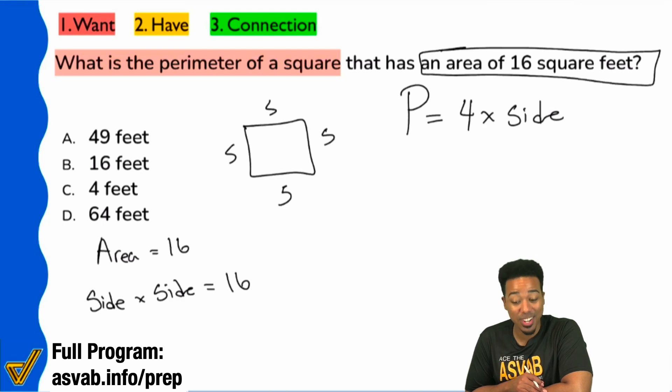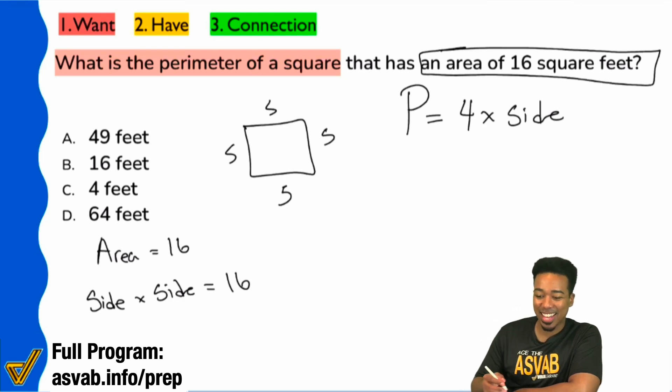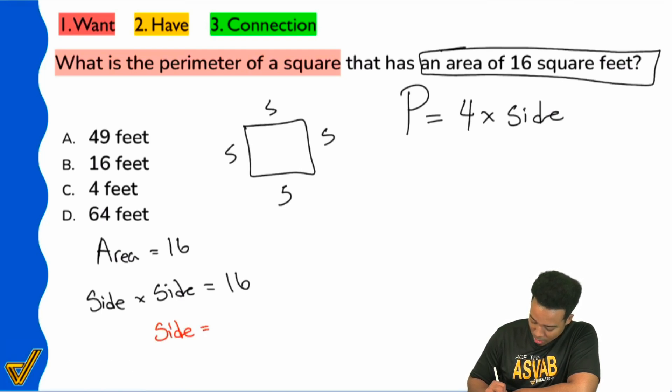And so, that's going to be 4. That's going to be 4. So, what I'll do is I'll go ahead and say right here, side equals 4.